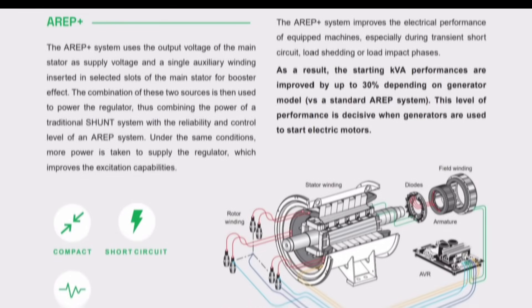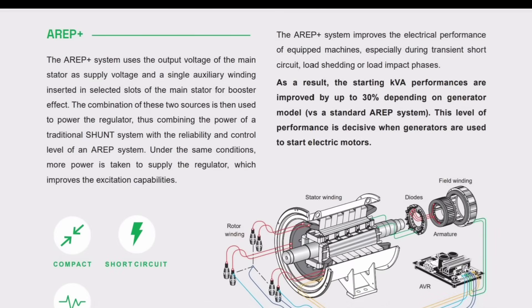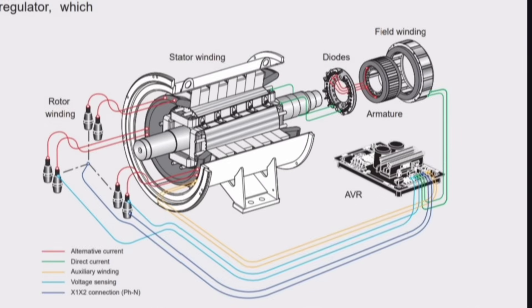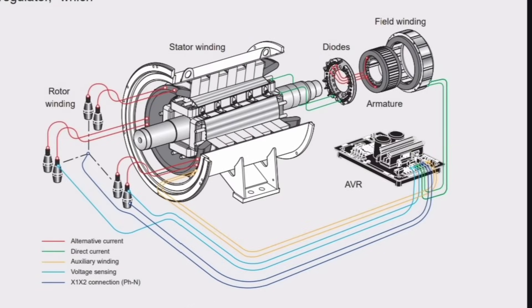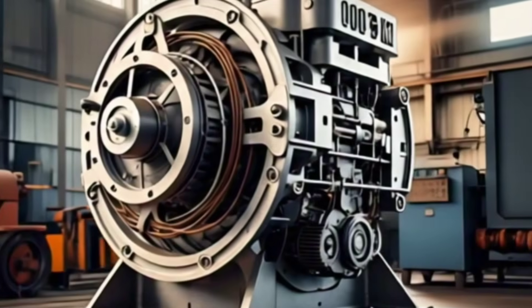The third type is the AREP excitation system, a smart solution used in modern brushless alternators. Instead of a separate PMG alternator, the AREP system uses an auxiliary winding built inside the main stator itself. This winding produces a small supply voltage directly for the AVR without depending on the main output winding. The result is better voltage regulation even during sudden load variations without the need for residual magnetism. AREP systems are cheaper than PMG systems but more reliable than self-excitation systems, making them the perfect balance between performance and cost.